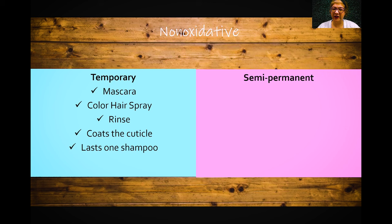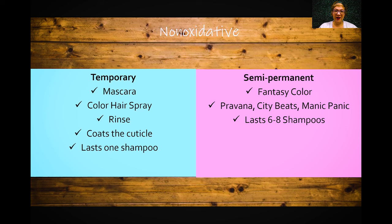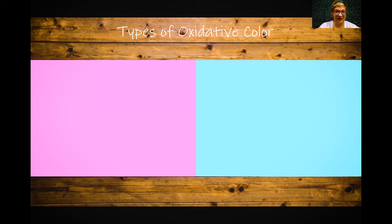Semi-permanent colors are your fantasy colors — Pravana, Pulp Riot, Manic Panic, City Beats. What you see in the bowl is the color you're going to get, as long as the hair has been pre-lightened. Typically with semi-permanent, if you're going for a bright color you almost always have to pre-lighten first. They're only meant to last about six to eight shampoos. That's what your textbook and state boards will say — it's fundamentals.